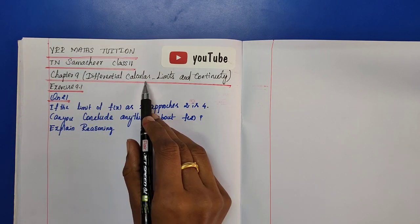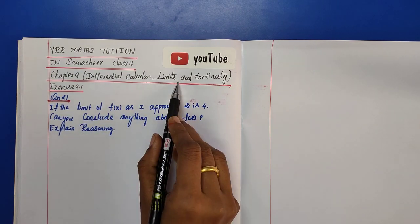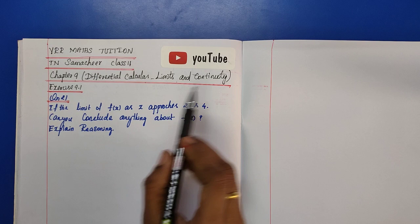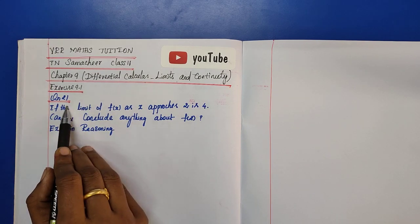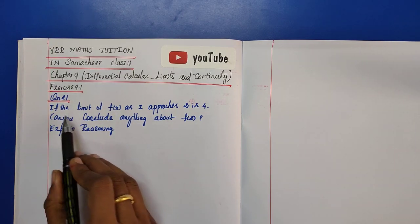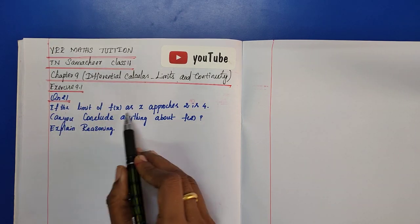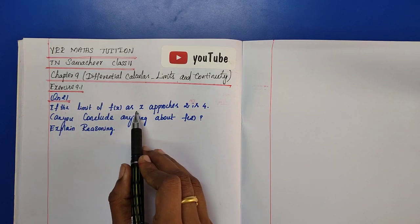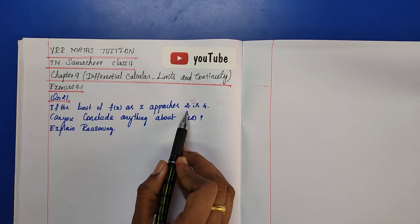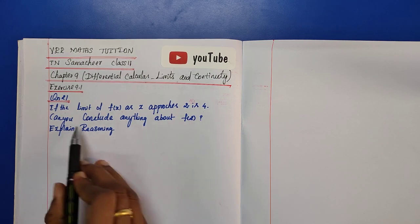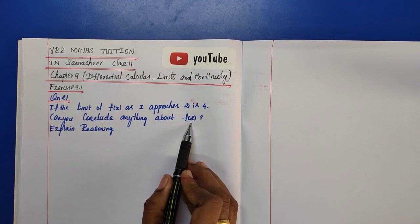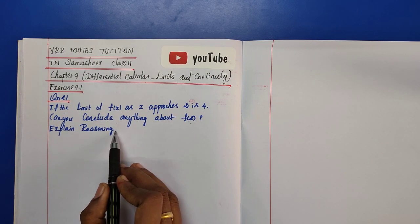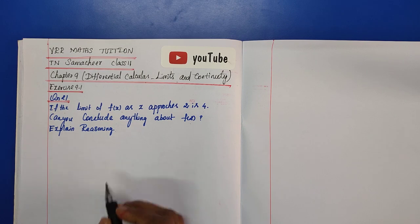Chapter 9, Differential Calculus: Limits and Continuity. Exercise 9.1, question number 21: If the limit of f(x) as x approaches 2 is 4, can you conclude anything about f(2)? Explain your reasoning.